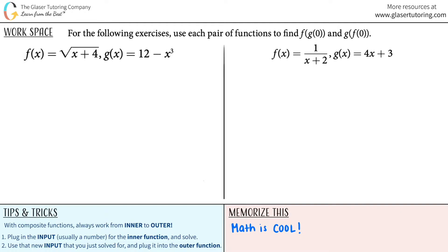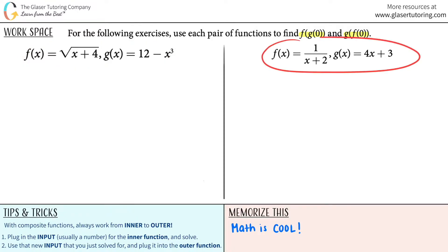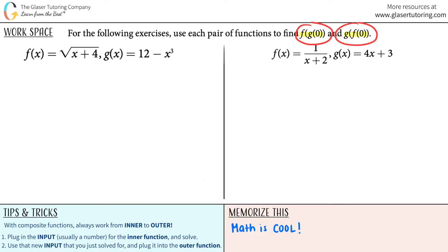For the following exercises, use each pair of functions to find f of g of zero and g of f of zero. So we have two individual questions here. On the left side we have f functions and g functions, and on the right side we also have f functions and g functions. We have to find what both of these composite functions are for each individual question. Let's start on the left side.